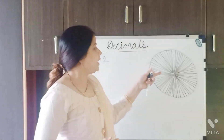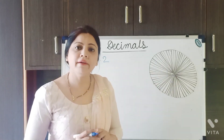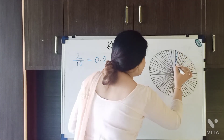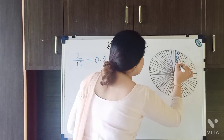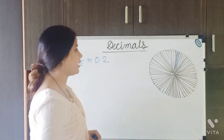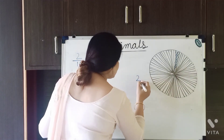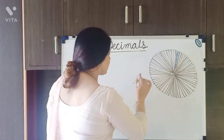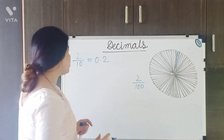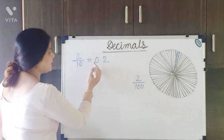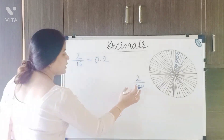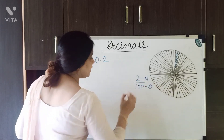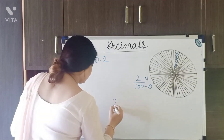Now I have divided the circle into 100 equal parts. Suppose I shade 2 of its parts. Then what fraction can I write? It will be 2 upon 100 — 100 equal parts are there and only 2 parts are shaded. As we have seen, 2 upon 10 is equal to 0.2. So how can we solve this? Similarly, 2 is the numerator and 100 is the denominator, so 100 will become the divisor.